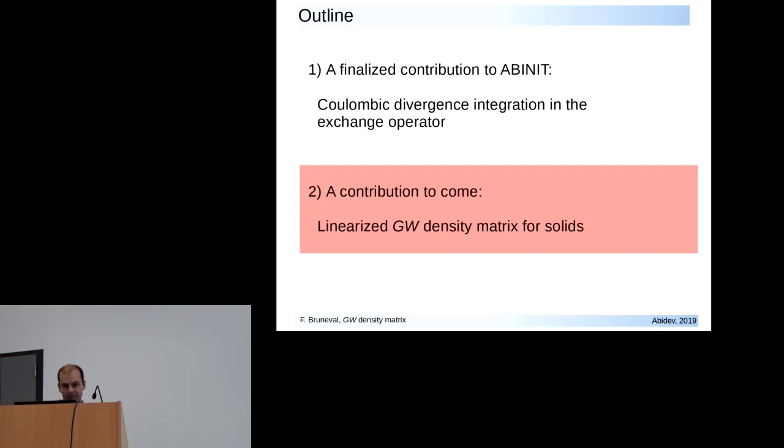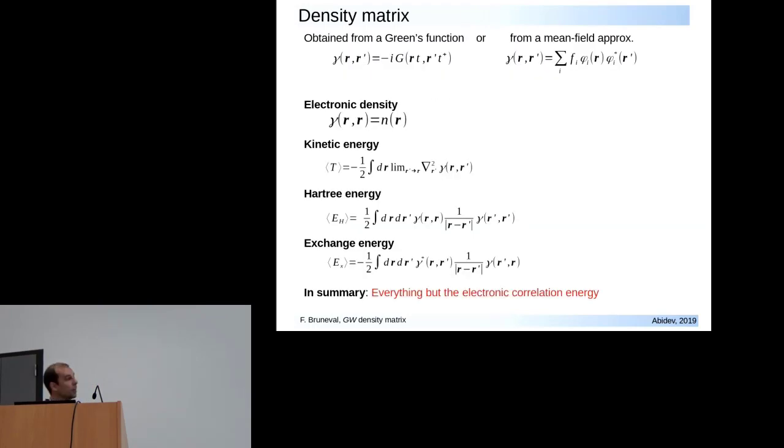The second topic is something I want to develop with Mark. It's something new that I've been developing in molecules, and I want to transport that into solids. What is the density matrix? I would like to calculate new density matrix from a GW-like approximation. The density matrix is something very simple and very useful. If you have a mean field, then you can write the density matrix γ(r,r') as a summation of occupation numbers and wave function taken in two different places.